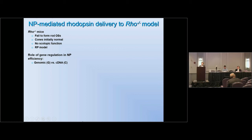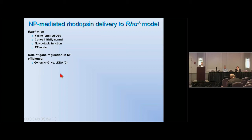Next, we looked at what we could do to enhance the level of expression of these nanoparticles. Since most gene therapy takes advantage of cDNA due to vector size limitations, we asked: if we include introns in our vector construction, can we get higher expression? We did this study in the rhodopsin knockout model. This model has no outer segment in rods, no rod function, and eventually the cones begin degenerating after the rods degenerate due to lack of rhodopsin.